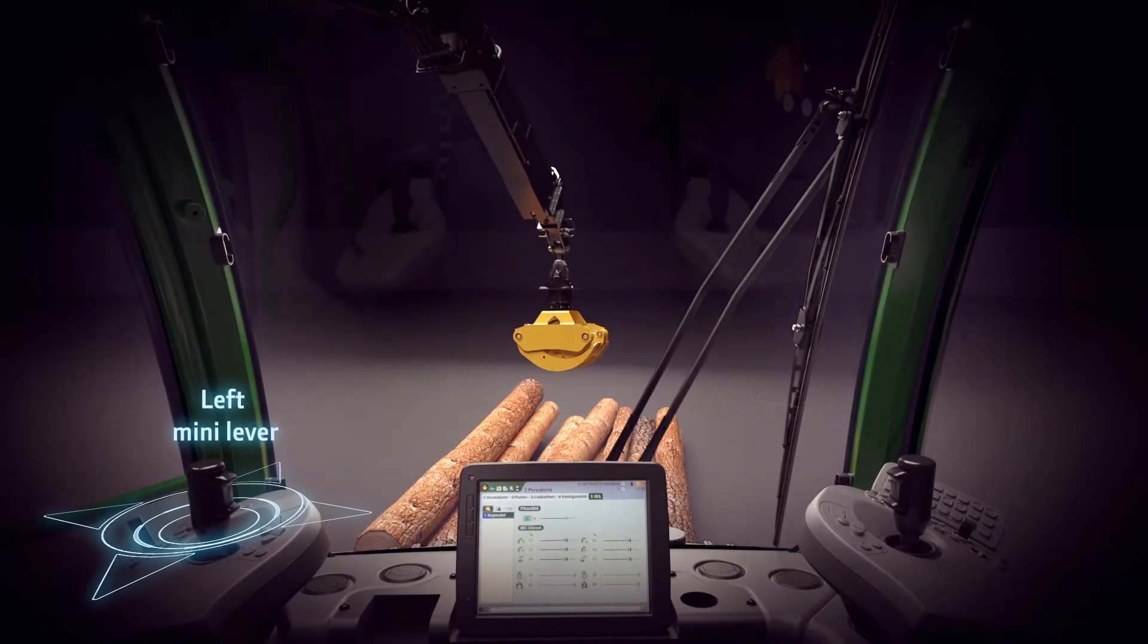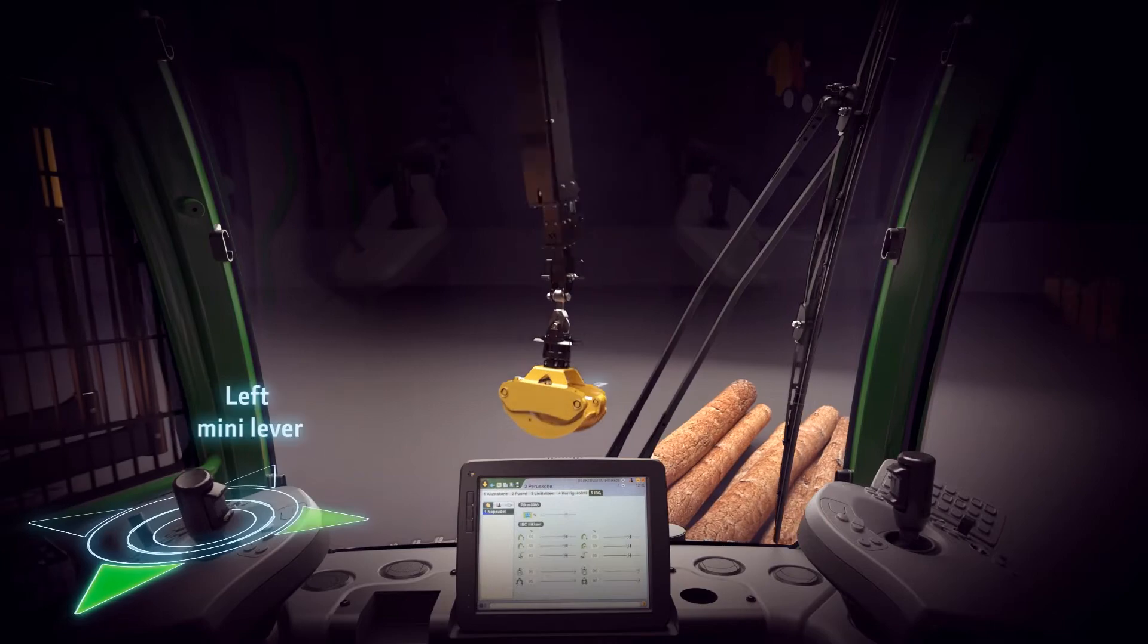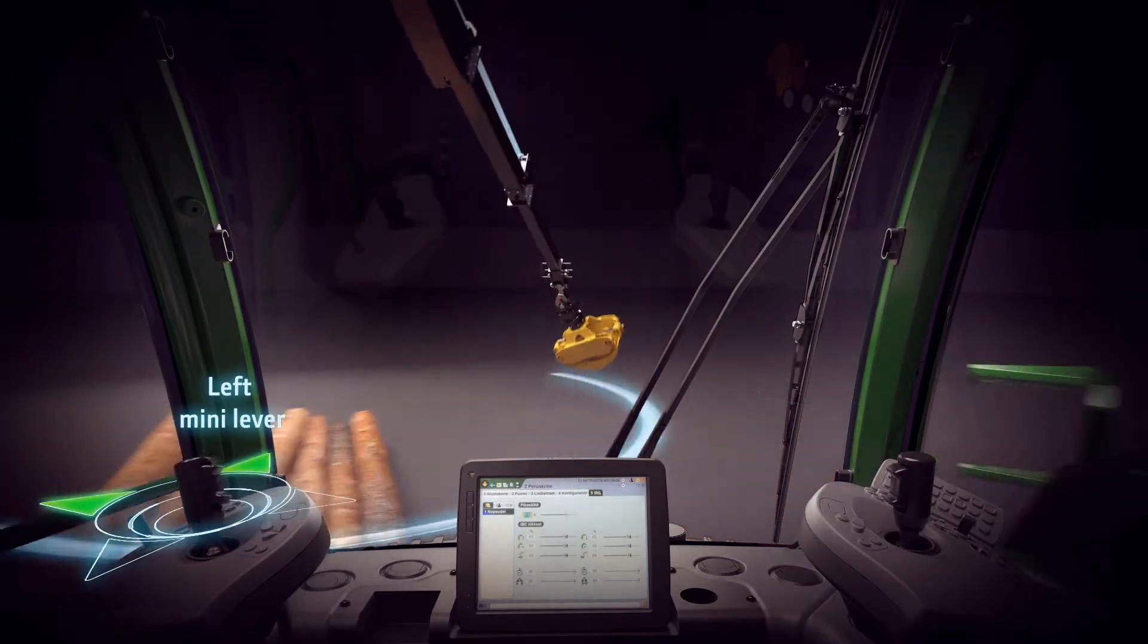With the mini-lever on the left, the operator moves the grapple horizontally, forwards, backwards or sideways.